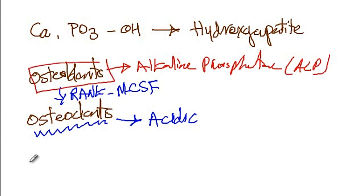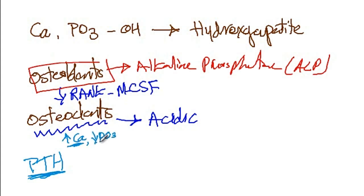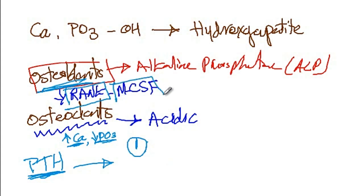One hormone you have to be familiar with is parathyroid hormone, which will overall increase the calcium concentration of the serum and decrease the phosphate concentration of the serum. Parathyroid hormone regulates calcium concentration via different mechanisms, including stimulating the osteoblasts to secrete RANK-L as well as macrophage colony stimulating factor to form more osteoclasts, resulting in more resorption of bones.